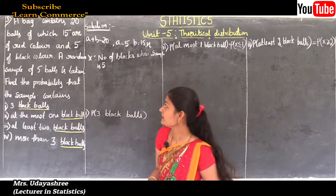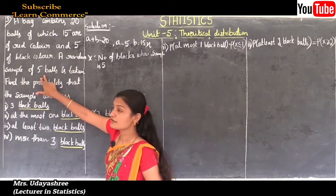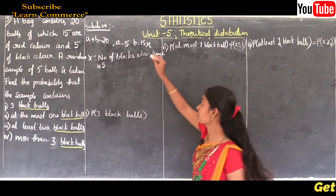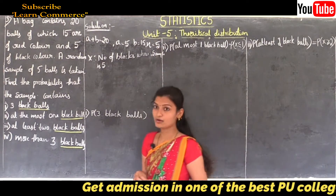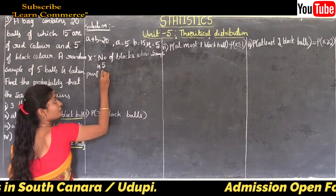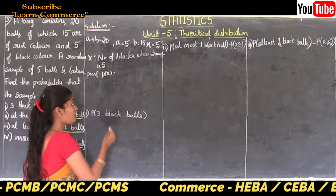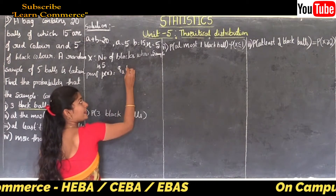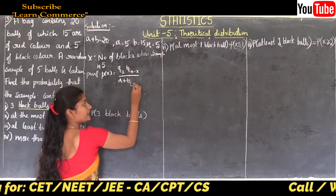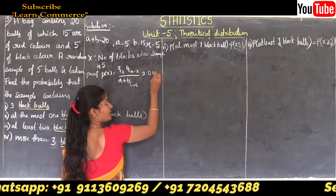The next observation is that a random sample of 5 balls is taken, so the sample size n equals 5. The probability mass function (PMF) of the hypergeometric distribution is: P(X=x) = [aCx × bC(n−x)] / (a+b)Cn, where x takes values 0, 1, and so on up to min(a, n).